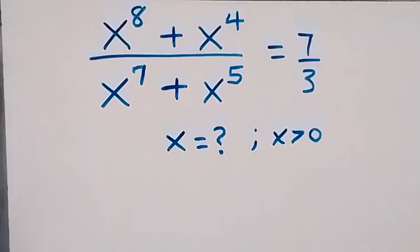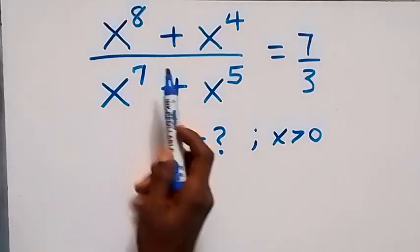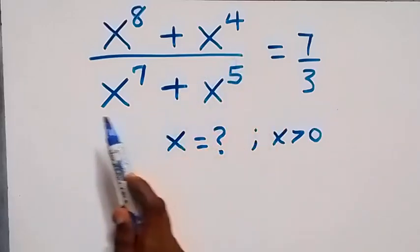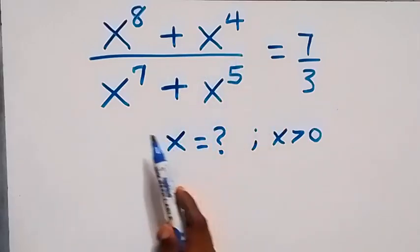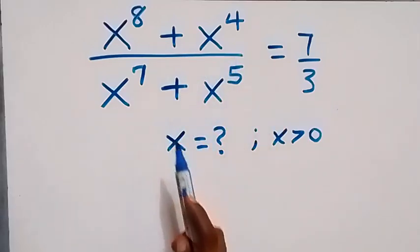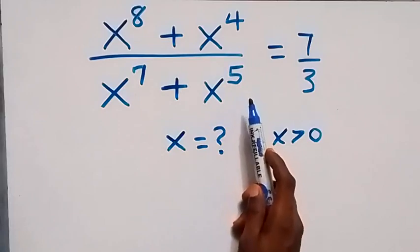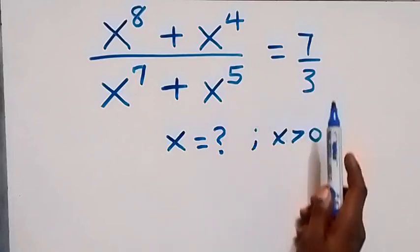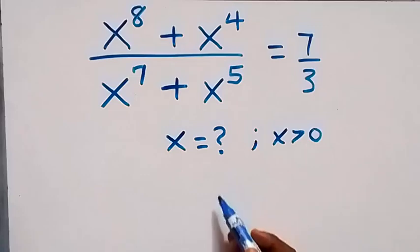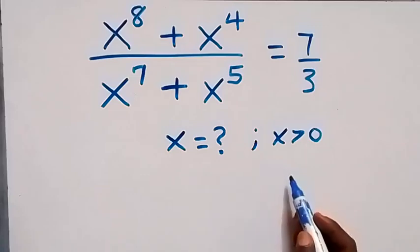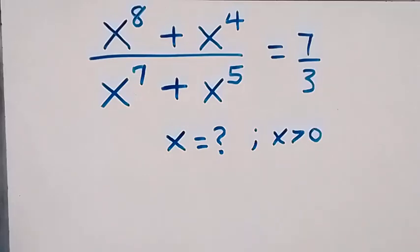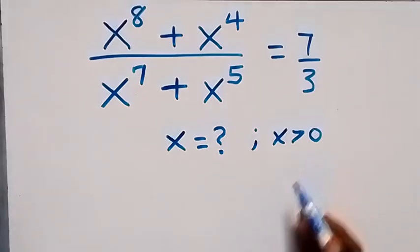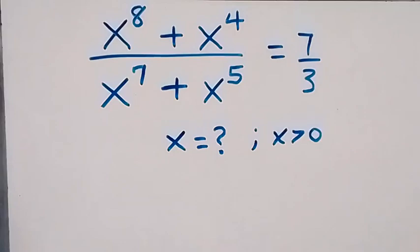Hello, you are welcome. How to solve this nice algebra problem: we have x raised to power 8 plus x raised to power 4, divided by x raised to power 7 plus x raised to power 5, equals to 7 over 3. Here we find the value of x, given that x is greater than 0, that is x is not a negative number.